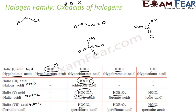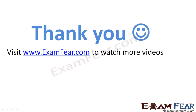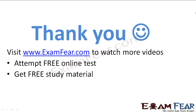Similarly, you can draw the shapes for the other halogen oxa acids as well. I have drawn the shapes for all four possible oxa acids for chlorine. Thank you — visit examfia.com to watch more videos, attempt free online tests, get study materials, find tutors and mentors, and much more. Thanks once again.